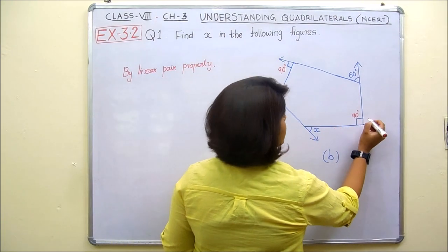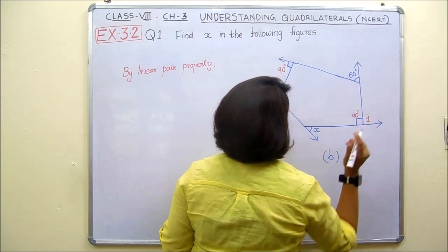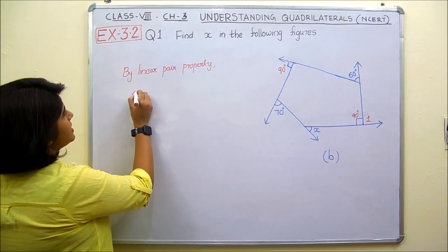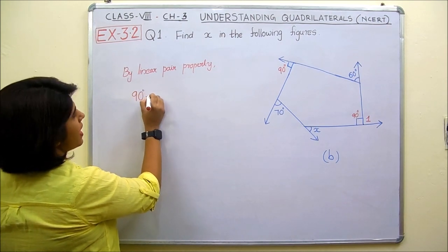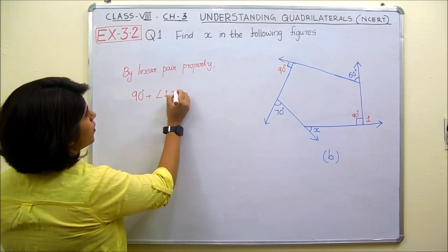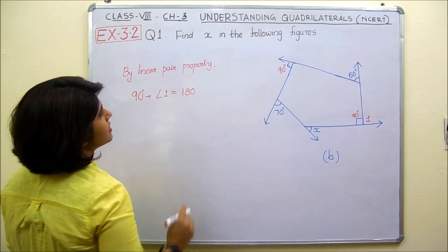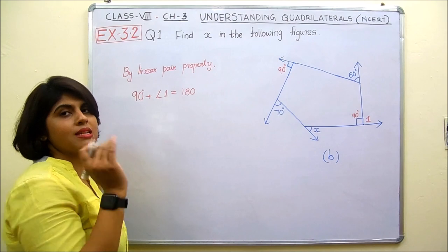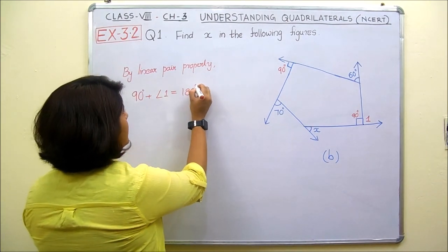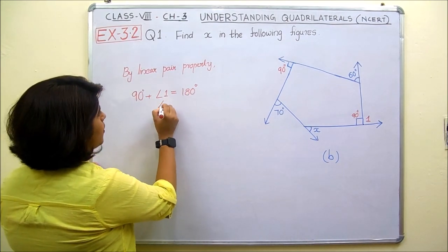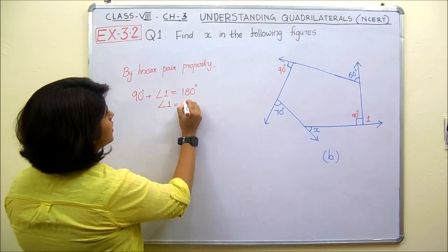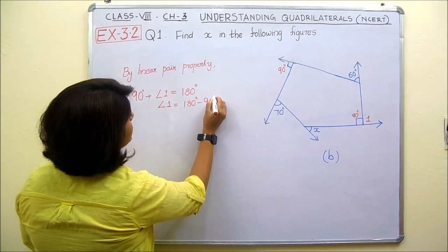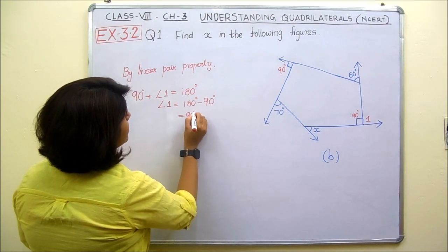Let us call that unknown exterior angle as angle 1. By the linear pair property, 90 degrees plus angle 1 equals 180 degrees, since the sum of angles in a linear pair is 180 degrees. Therefore, angle 1 equals 180 degrees minus 90 degrees, which is 90 degrees.